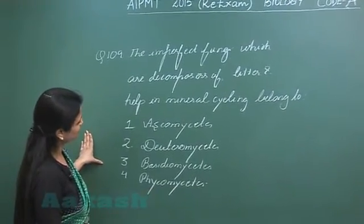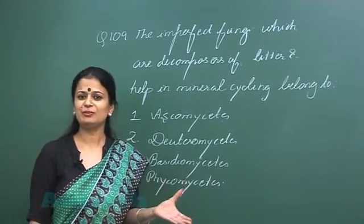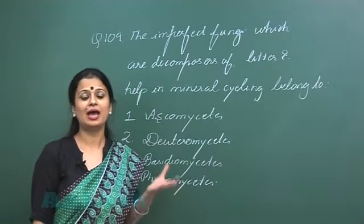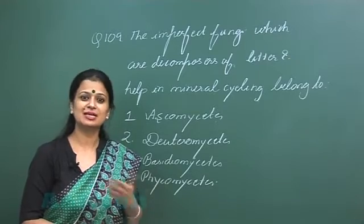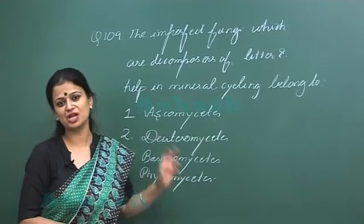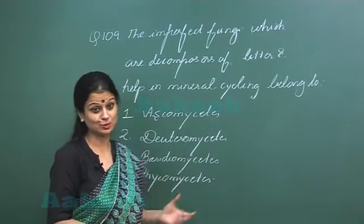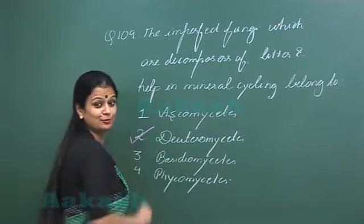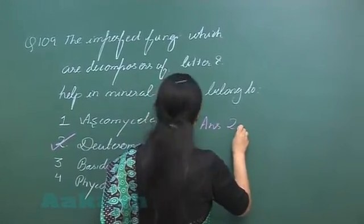Question 109: The imperfect fungi belongs to which class? Imperfect fungi is the one which has asexual and vegetative stages in the life cycle, but sexual reproduction is absent. This is known as fungi imperfecti, and the class to which this fungi belongs is Deuteromycetes. So the right answer is option number 2.